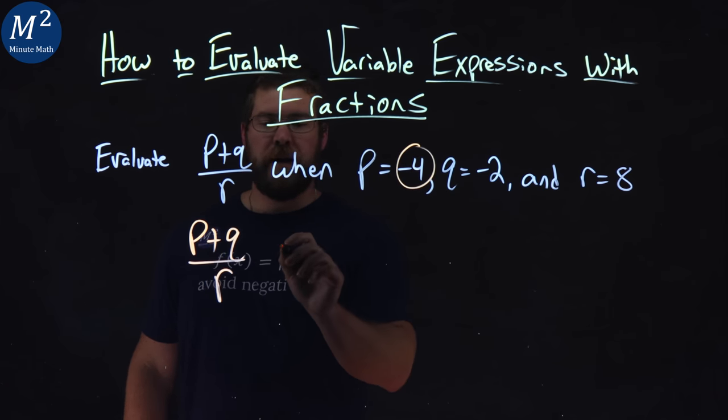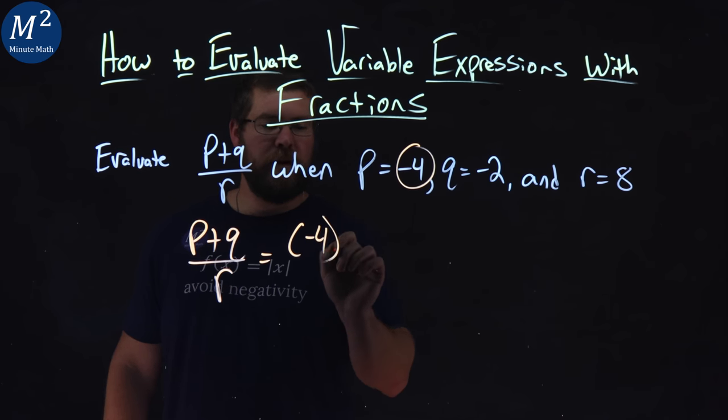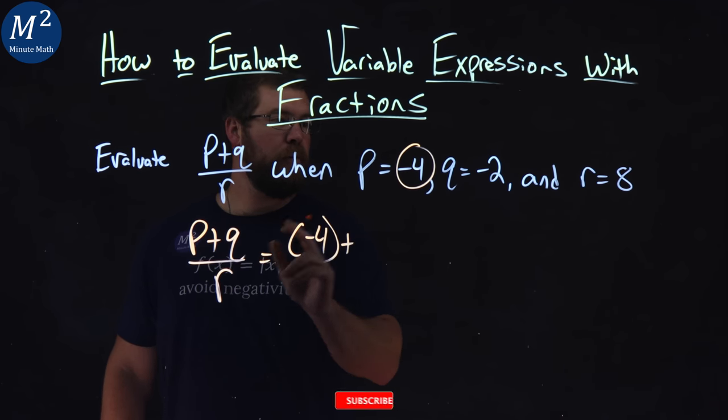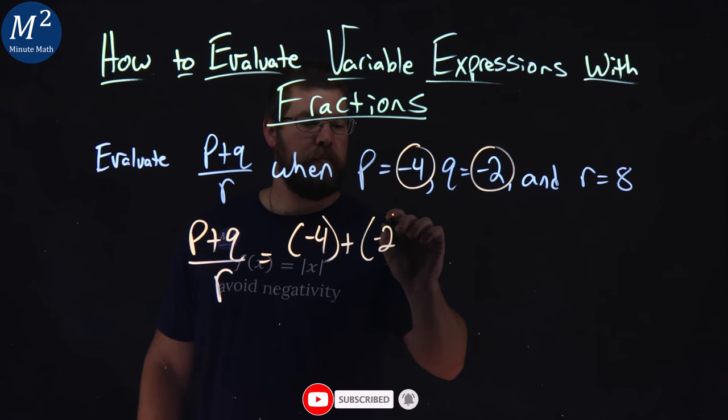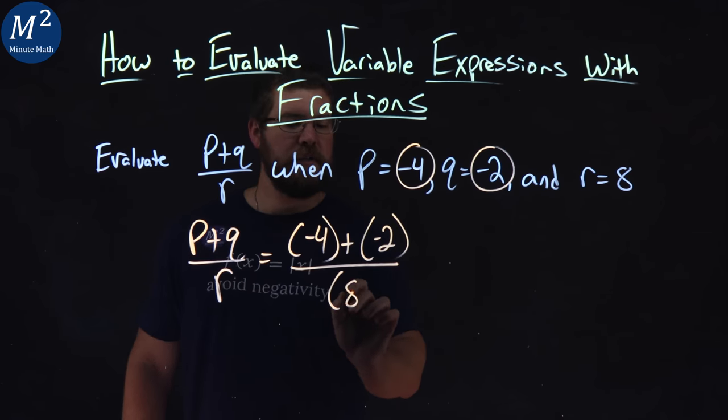P is negative 4. So instead of P, I have negative 4 here, plus Q, negative 2, over our R value, which is 8.